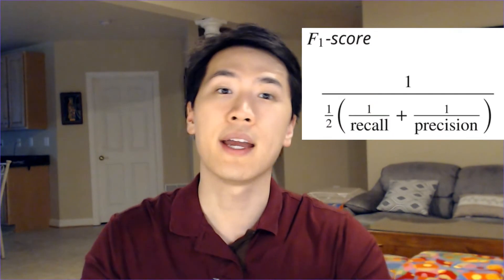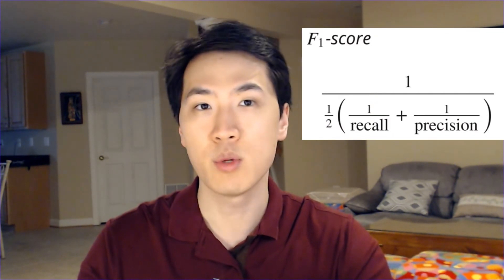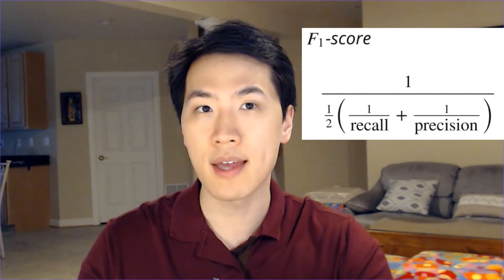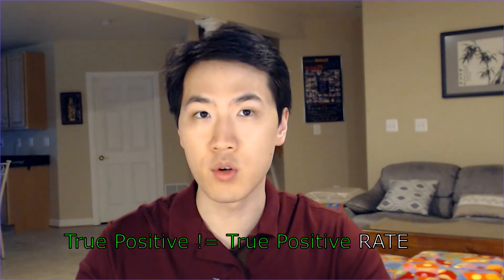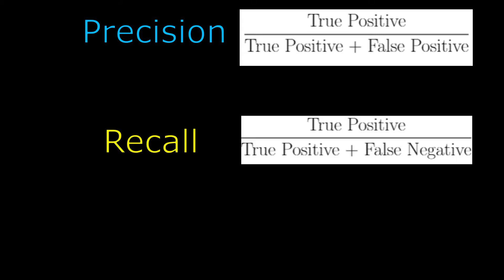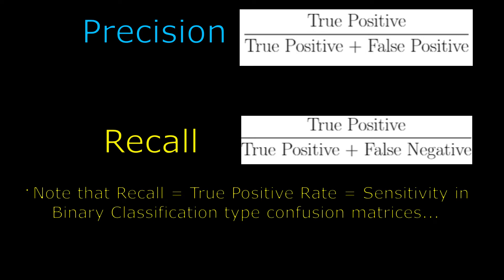Last but not least, related to the applications of the confusion matrix, is the F1 score. The F1 score is the true accuracy of the given model because it takes a harmonic mean between precision and recall. You can use this F1 score to compare amongst a variety of different classification algorithms, and whichever one has the highest is usually the one that you end up choosing. The components that make up precision and recall are the cell observations within the confusion matrix. Precision is defined as true positive divided by true positive plus false positives, and recall is defined as true positives divided by true positive plus false negatives.